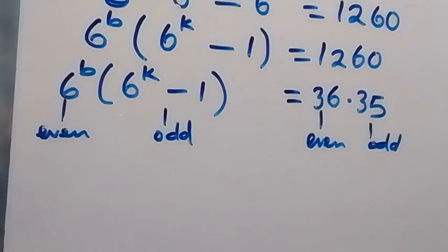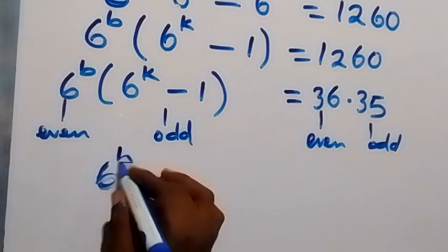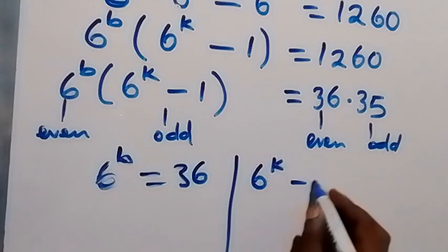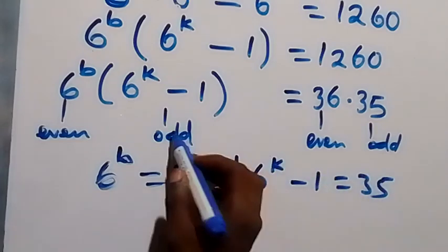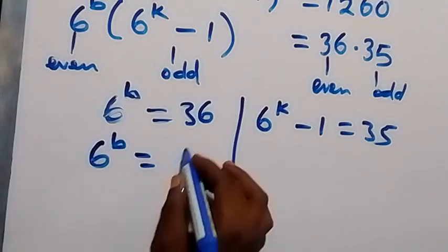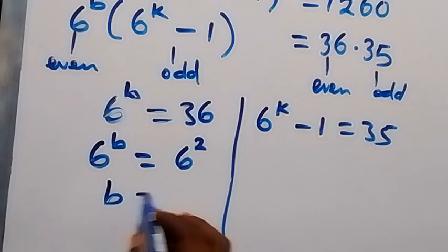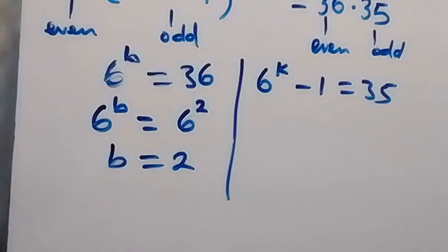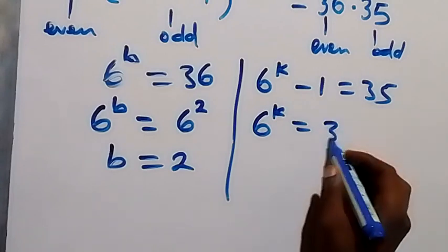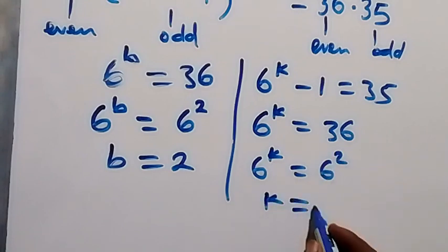Comparing both sides, we equate 6 raised to power b with 36, and (6^k minus 1) with 35. From 6^b = 36 = 6 squared, the bases are equal so b equals 2. For the other part: 6^k minus 1 equals 35, so 6^k equals 36, which is 6 squared, giving k equals 2.